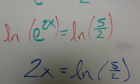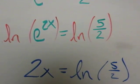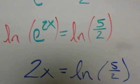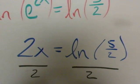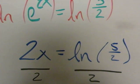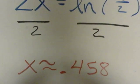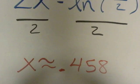So now I have 2x equal to the natural log of the fraction 5 over 2. I'm going to get the x totally alone by dividing both sides by 2, and when I type that into my calculator, I should get that x is approximately 0.458.